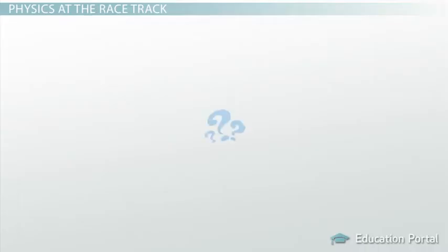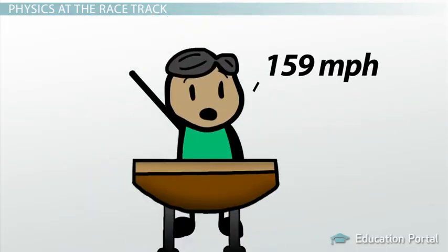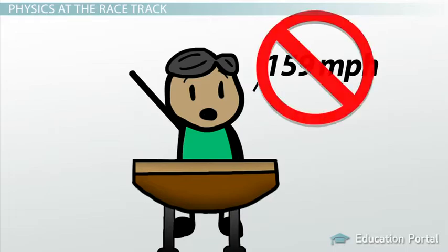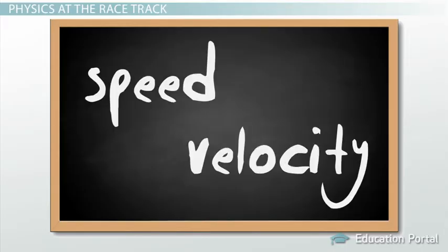Physics Pop Quiz Time! What was Jimmy Johnson's average velocity? Be honest, how many of you said 159 miles per hour? The correct answer is zero miles per hour. The reason for this dramatic difference lies in the subtle distinction between speed and velocity.